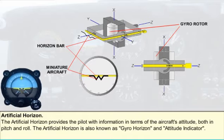The artificial horizon, or attitude indicator as it's sometimes called, provides the pilot with information in terms of the aircraft attitude both in pitch and roll. It's a primary instrument replacing the natural horizon in poor visibility. The attitude display consists of a miniature aircraft shape or gull wing painted or engraved centrally on the inside of the glass face of the instrument, fixed to the instrument case.